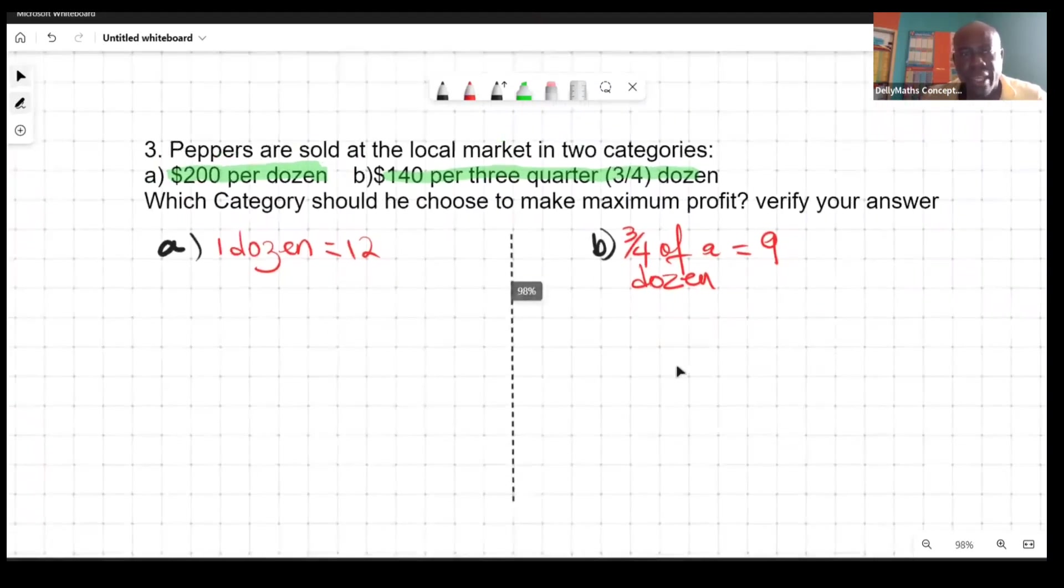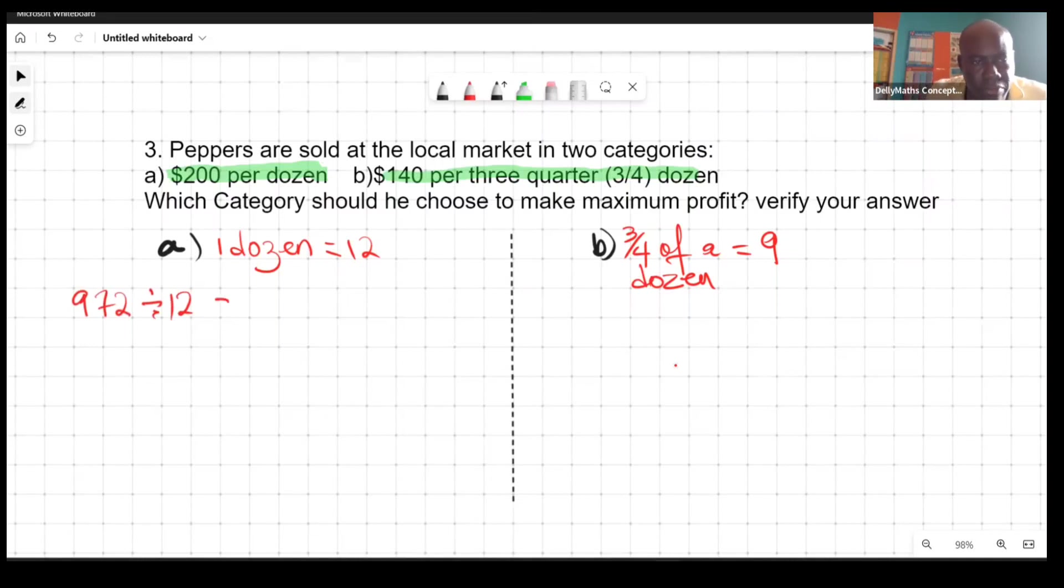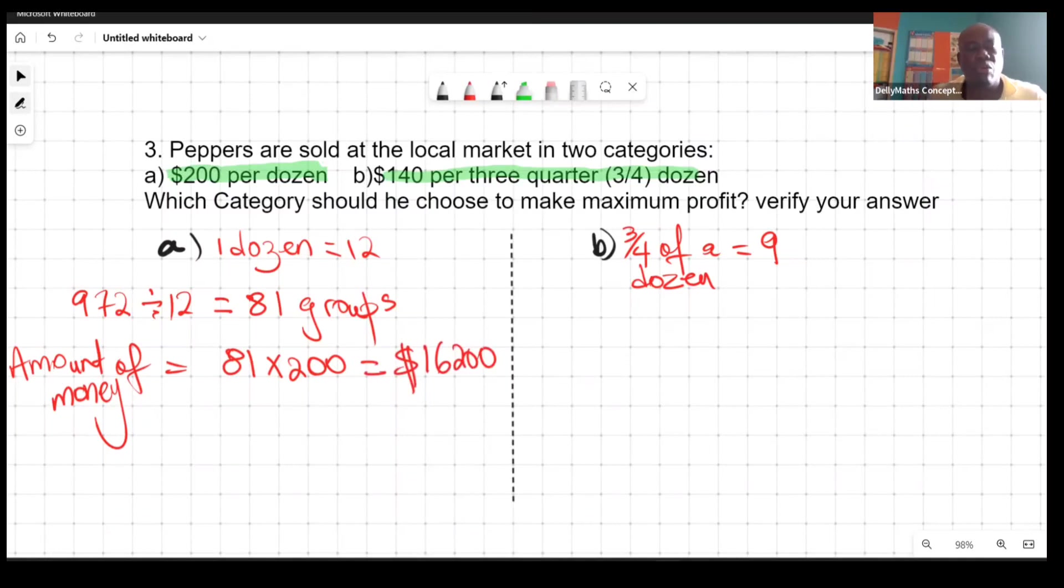Let us look at category A because you want to know which one you should choose to make the maximum profit. We're going to divide 972 by 12 to find out how many groups of 12 we will get and this gives us 81. We have 81 groups of 12. In terms of the money it's $200 for every set of 12, so the amount of money will equal 81 times 200, which equals $16,200.